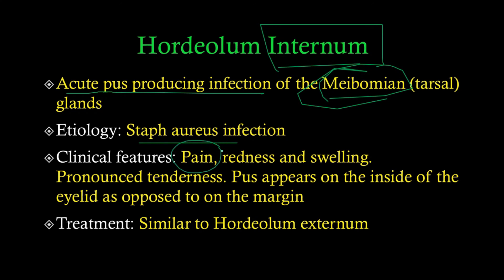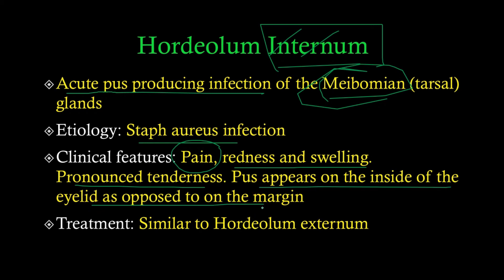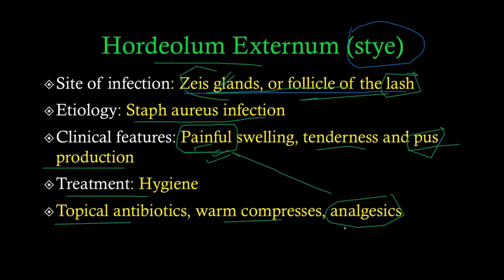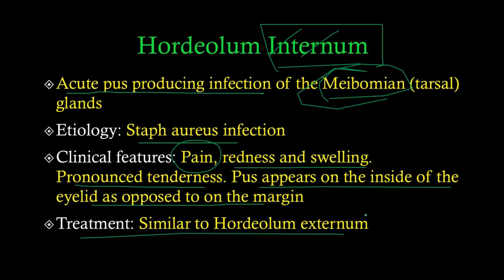Hordeolum internum: etiology is staph aureus. Clinical features include pain — once again painful — redness, swelling, and pronounced tenderness, even more than in hordeolum externum. The pus appears on the inside of the eyelid as opposed to the margin. Treatment is again topical antibiotics, warm compresses, analgesics, and general hygiene care.